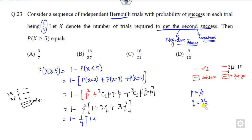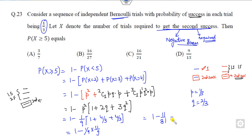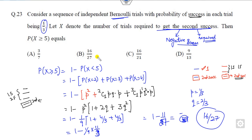With p = 1/3 and q = 2/3, substituting: p² = 1/9. The bracket becomes 2 + 2·(2/3) + 3·(4/9) = 2 + 4/3 + 4/3. This simplifies: 1/9 × (expression) gives 11/81. After simplification the final answer is 16/27. This is the correct answer, and this question is related to the negative binomial distribution.